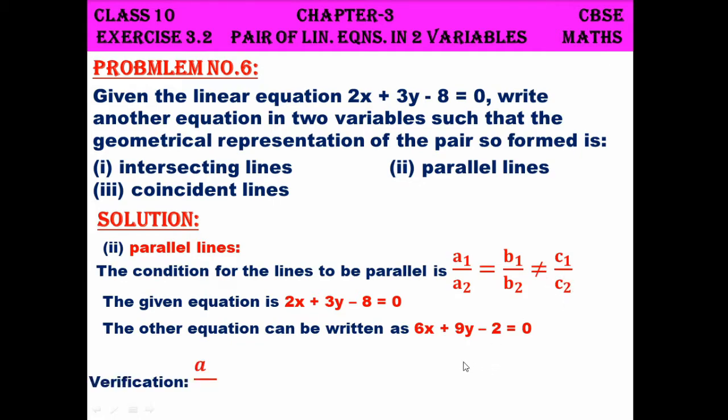Now verify: a1 by a2 equals 2 by 6, that is 1 by 3. b1 by b2, that is 3 by 9, that is also 1 by 3. So the first two ratios are the same. But c1 by c2, it's minus 8 by minus 2, that equals 4. It's automatically not equal. So this is the next example.